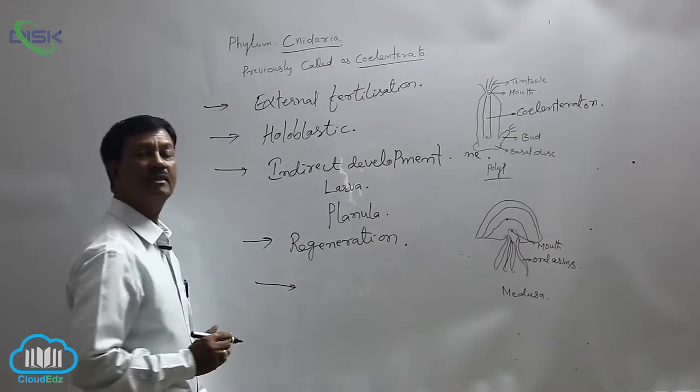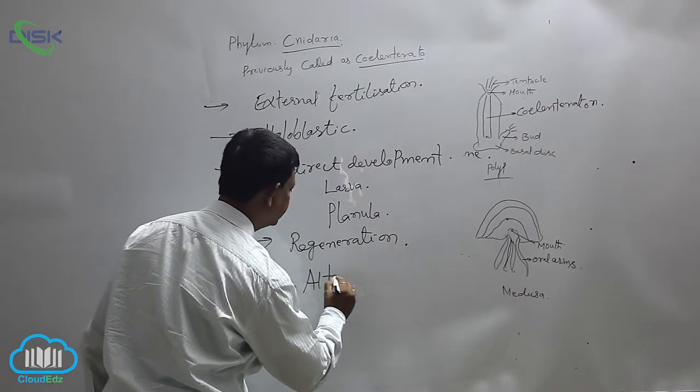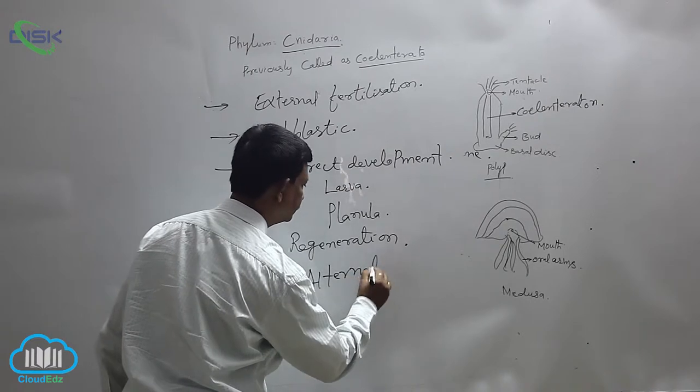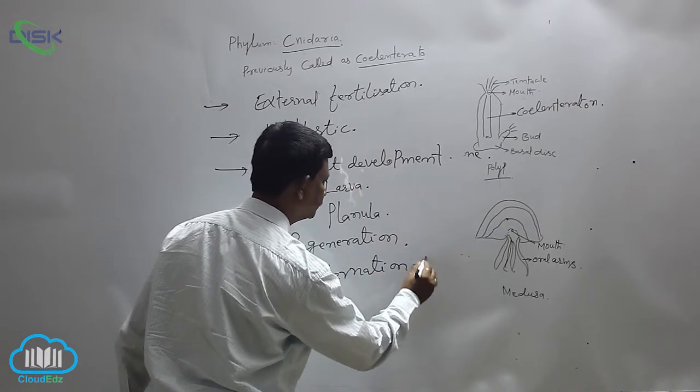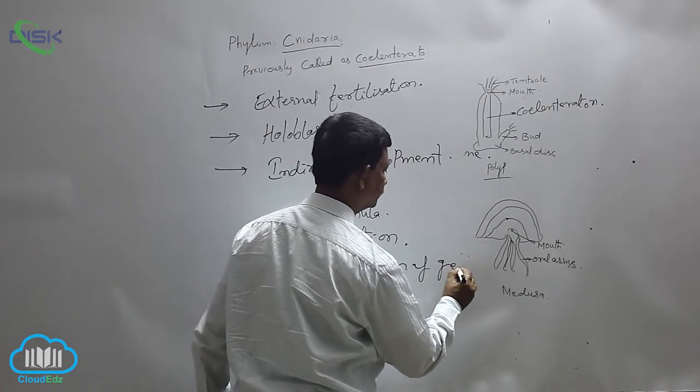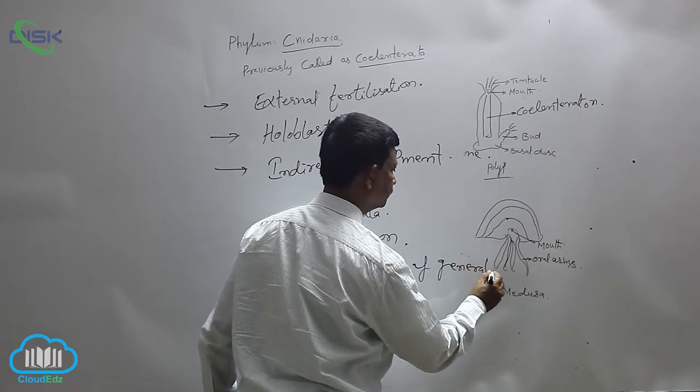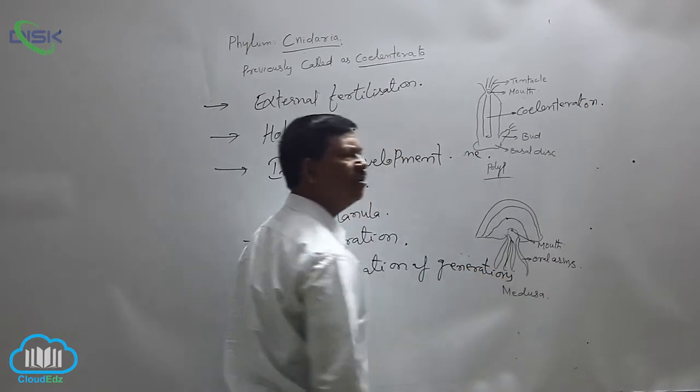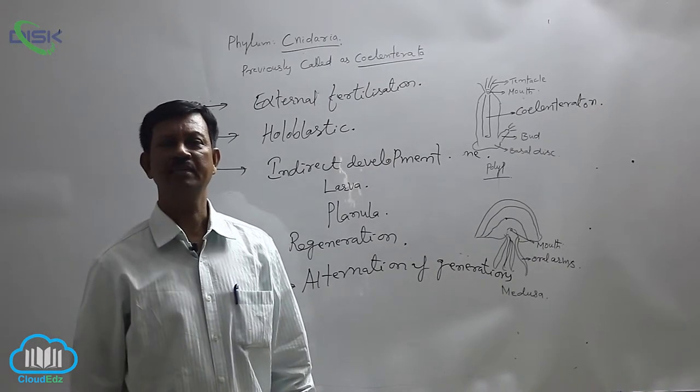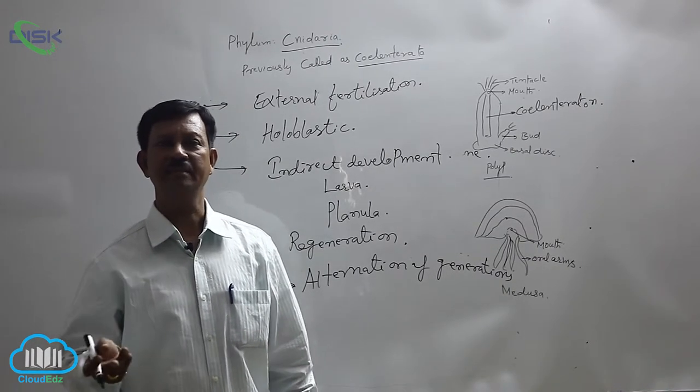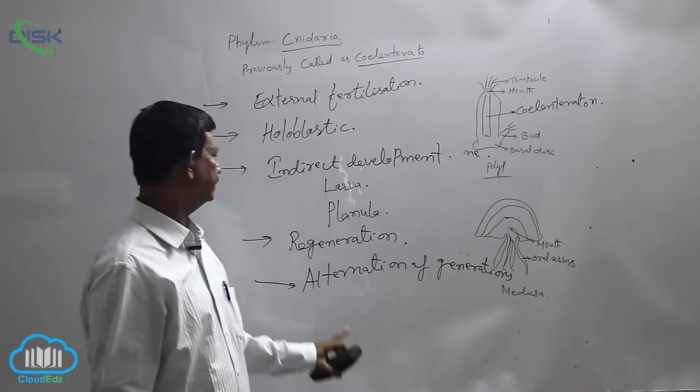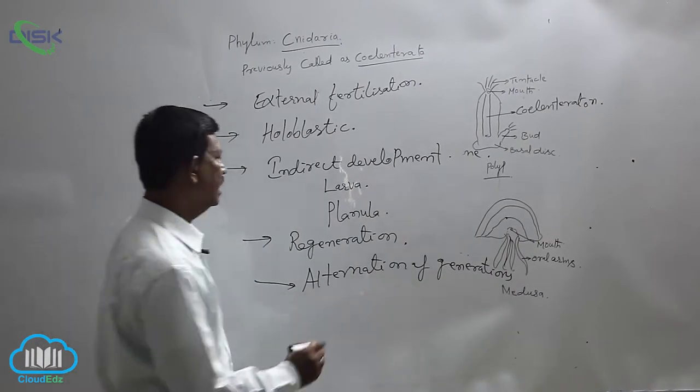Another characteristic is the presence of alternation of generations. Alternation of generations means asexual and sexual types alternately repeat. This type of system is known as alternation of generations.